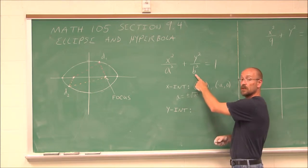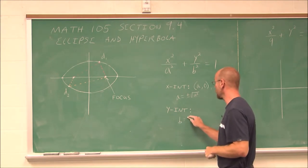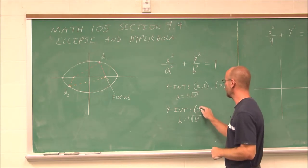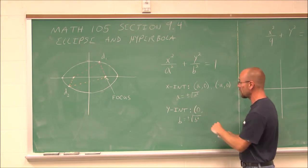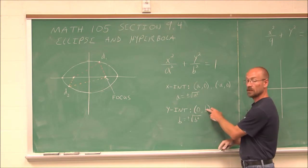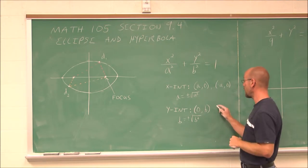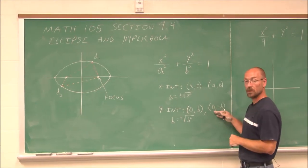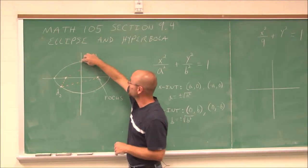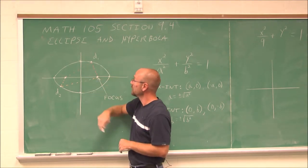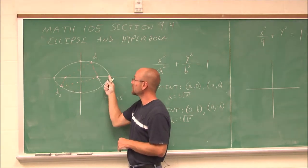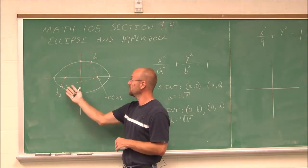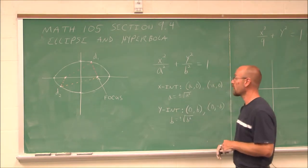We can do the same thing for b. b is going to be plus or minus the square root of b squared. Our y-intercept, where x is always 0, would be (0, b) — the intercept above the axis — and (0, negative b) — the intercept below the axis. With those four values, we can connect them to give us the shape of our ellipse on a graph.